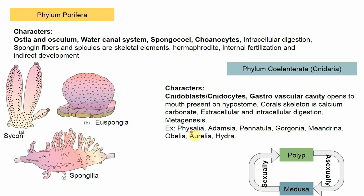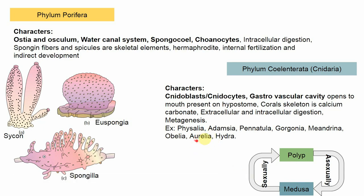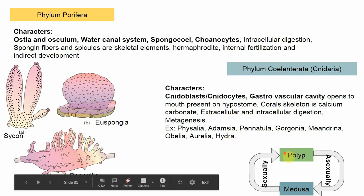Examples of phylum Cnidaria: Physalia (Portuguese Man of War), Adamsia (sea anemone), Pennatula (sea pen), Gorgonia (sea fan), Meandrina (brain coral), Obelia — which shows both polyp and medusa forms — Aurelia, which is a medusa form, and Hydra, which is a polyp form. Adamsia is also a polyp form.